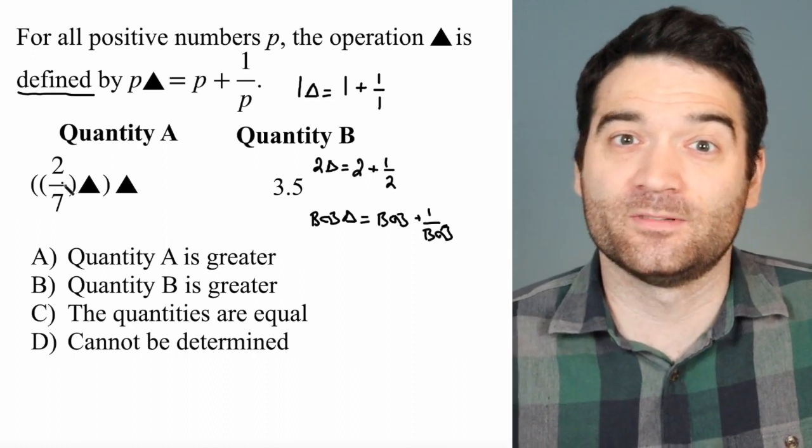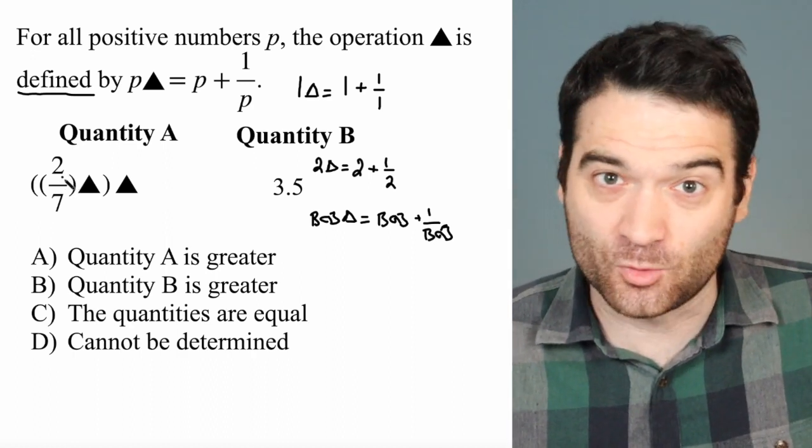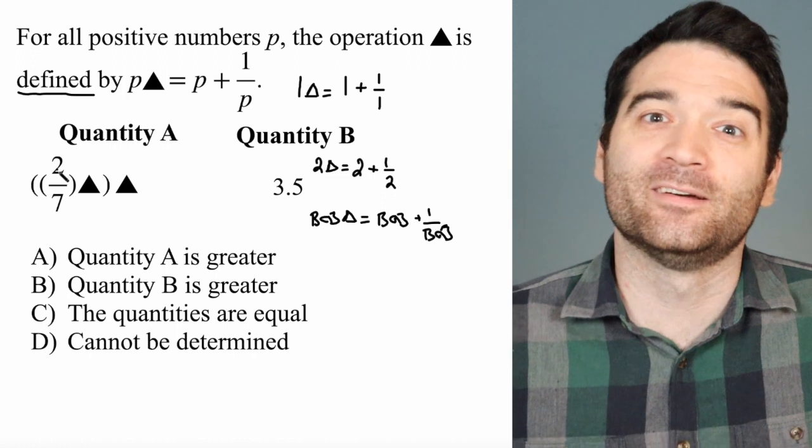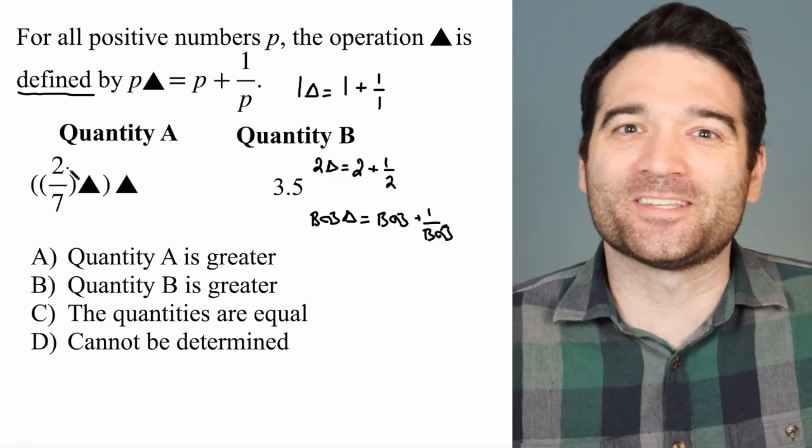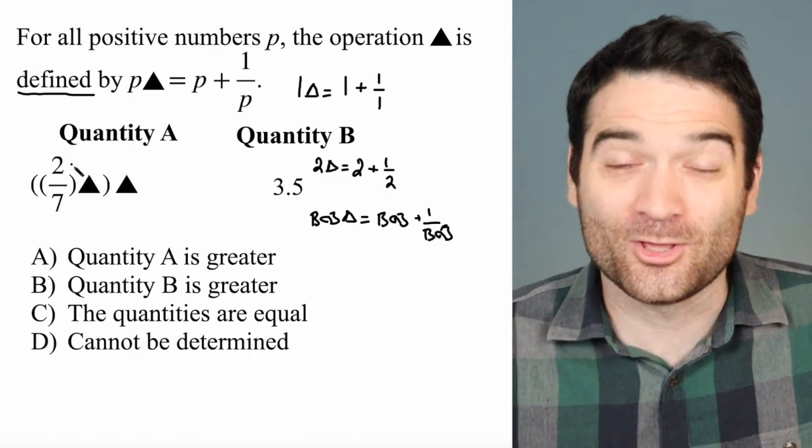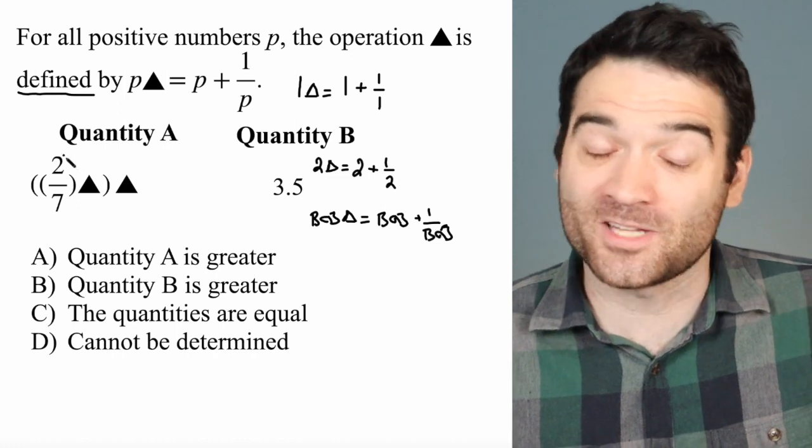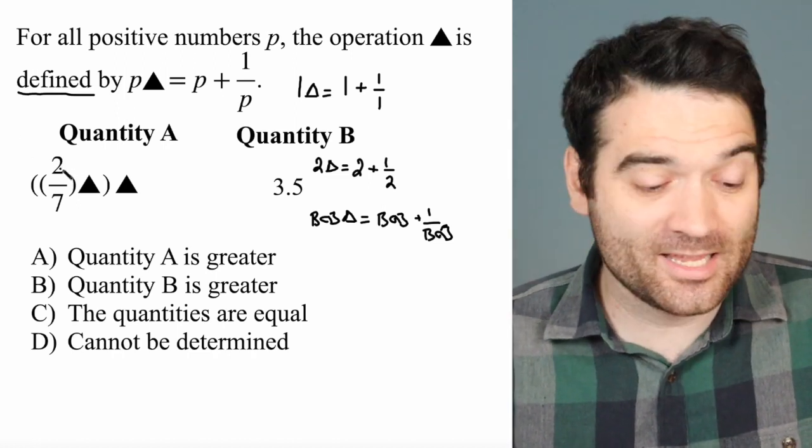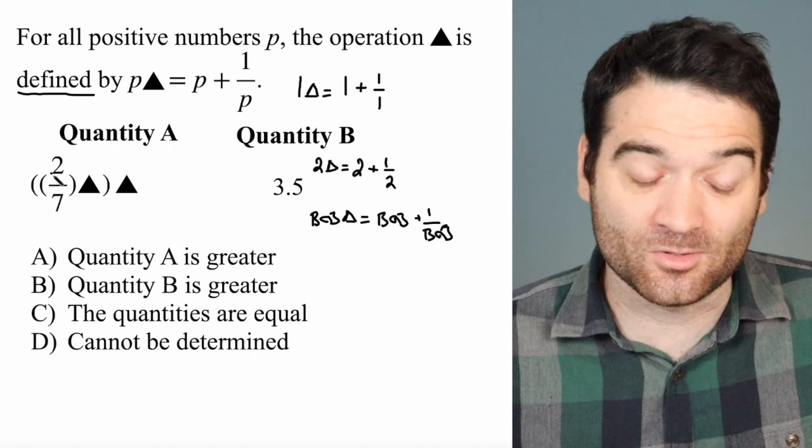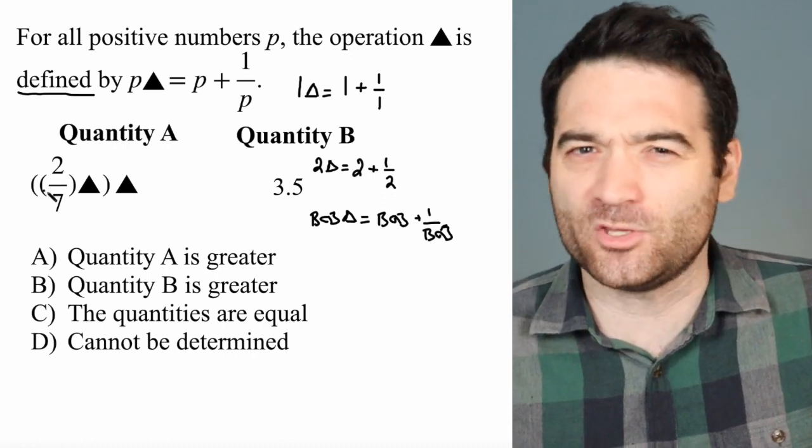What I would suggest doing here is using the most valuable tool that you have on the GRE, aside from your brain, which is the calculator, right? You have access to a calculator at all times. So what you can do is turn 2 sevenths into a decimal, namely about, I think it's 0.29. You can double check this on your calculator.